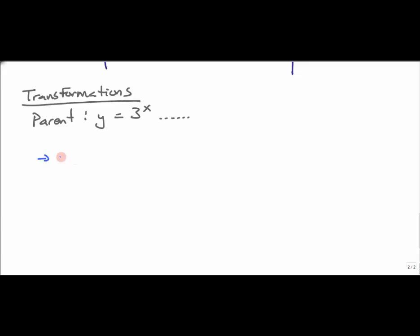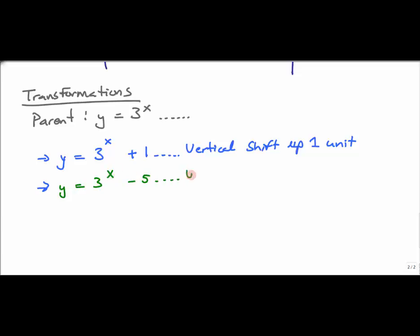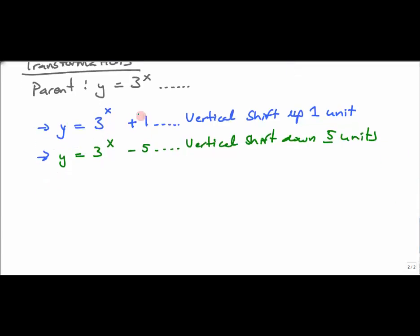From the parent graph y = 3^x, adding a constant outside the exponent gives a vertical shift. For example, y = 3^x + 1 is a vertical shift up 1 unit, and y = 3^x - 5 is a vertical shift down 5 units. If it's on the outside of the original function, it's a vertical movement. For y = 3^(-x), the negative is within the argument of the base, so this is a reflection across the y-axis.